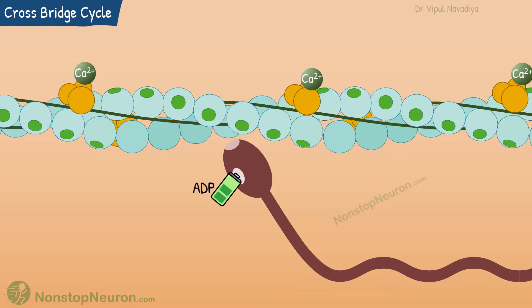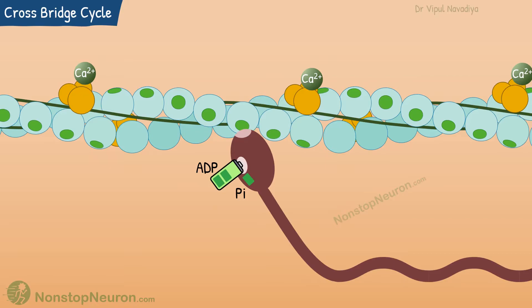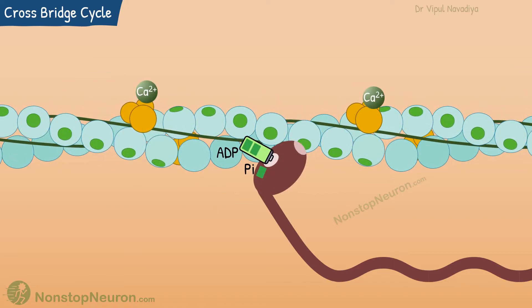This head always wants to bind with actin, but the binding was prevented by tropomyosin covering the binding site. Now that the site is exposed, the head can bind with actin. This triggers a power stroke where the head bends and pulls the thin filament over the thick filament towards the center of the sarcomere. Phosphate is released during the power stroke.